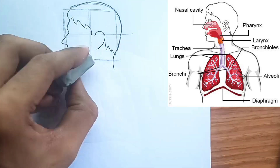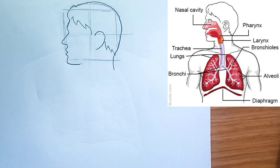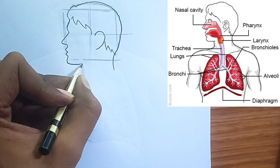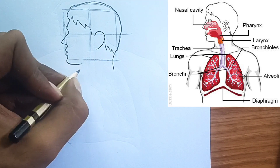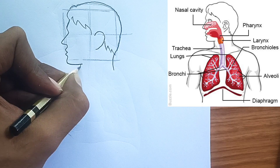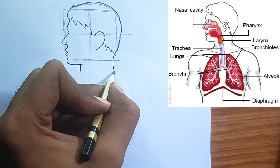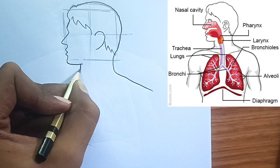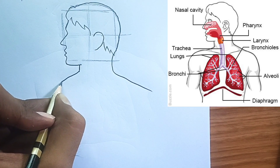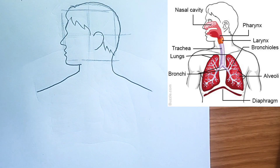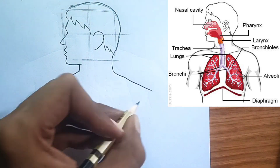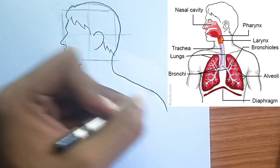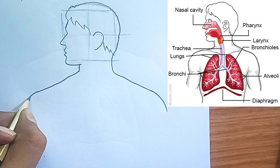Trachea — Windpipe: The trachea is a sturdy tube reinforced by rings of cartilage to keep it open. It's lined with cilia, tiny hair-like structures that sweep mucus and trapped particles upward and out of the respiratory system.